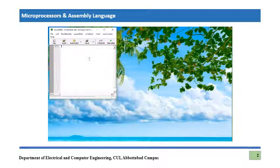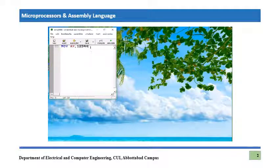Let's write some simple instructions. We are writing MOV AX, 1234h. What is going to happen is that 1234h is a 16-bit hexadecimal value and it is going to be shifted into the accumulator register, or AX register. Let's see what happens once we press the 'Evaluate' button.